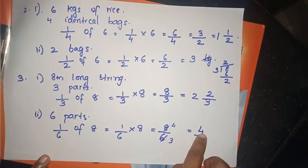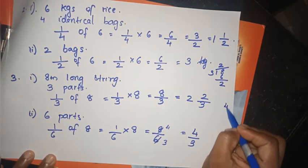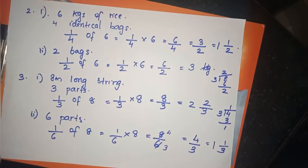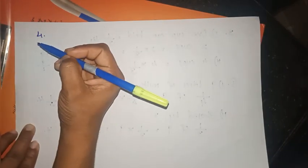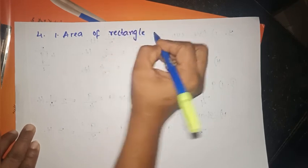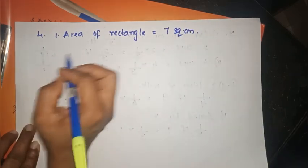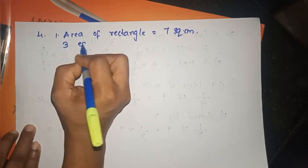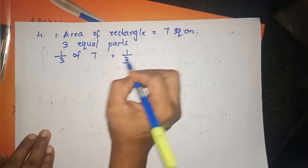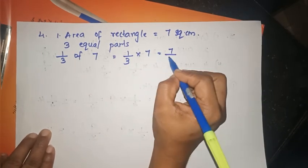Now we have to solve the next question, the 4th question. A rectangle of area 7 square centimeters is cut into 3 equal parts. We have to solve the area of each part. It is 7 square centimeters divided into 3 equal parts: 1/3 of 7, so 1/3 into 7 equals 7/3.